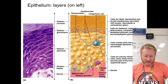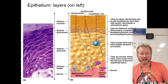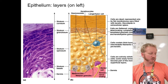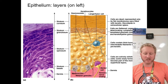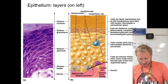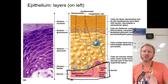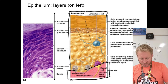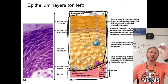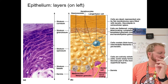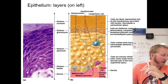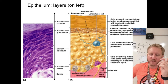Now we'll look at the actual layers of the epidermis. The layers are labeled on the right and explanations on the left. We'll start with the deepest layer first. Looking at the picture, the dermis is at the bottom — we'll get to that later. The deepest layer of the epidermis is the stratum basale, also called the stratum germinativum — a single row of cells at the bottom.